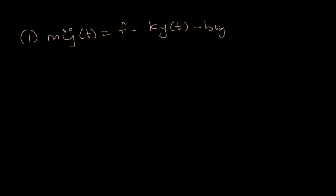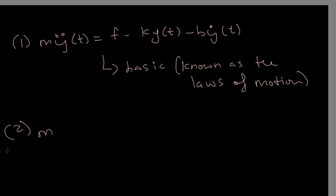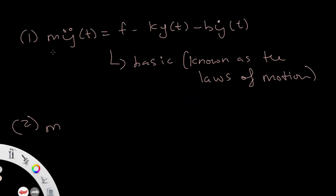First one is the basic, known as the laws of motion. We have the second order equation, system model, which is called the second order because the highest derivative is Y double dot.